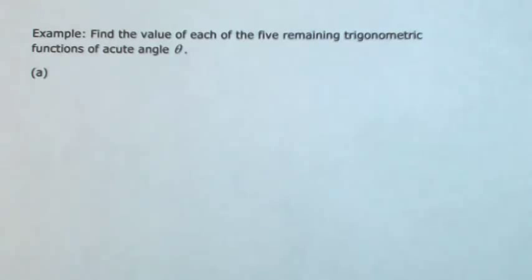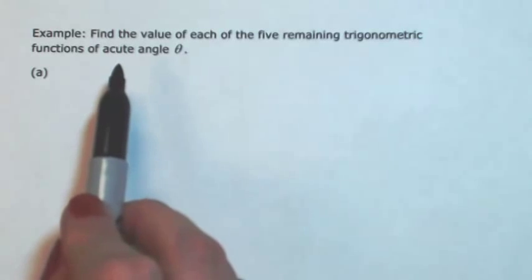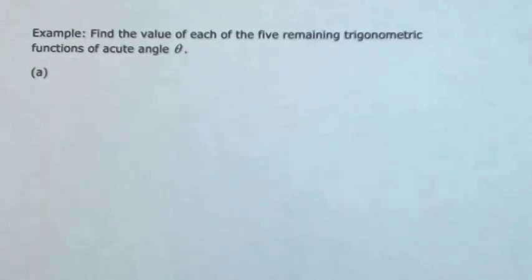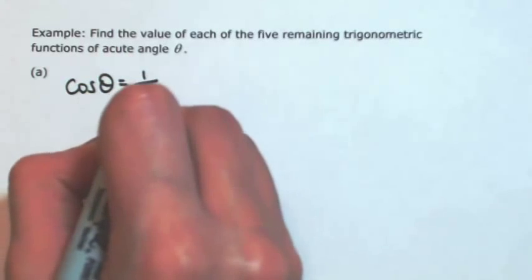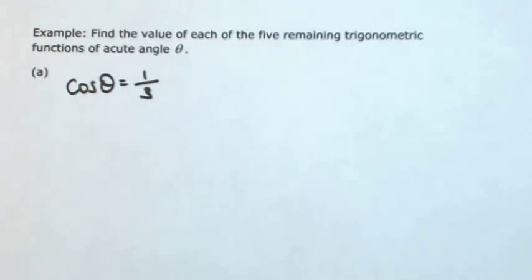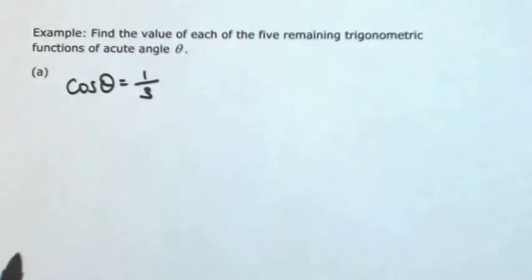Let's say you're given one trig function of theta, but you're also told that theta is acute, meaning that it's in the first quadrant. Because the angle is acute, you can guarantee that all the trig functions of theta are going to be positive because you're in the first quadrant.